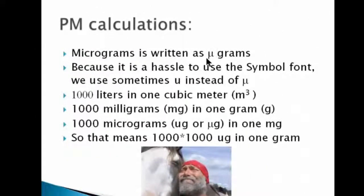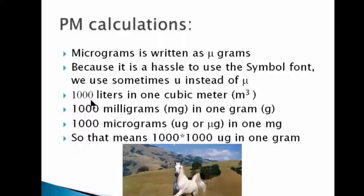Micrograms is written with the Greek symbol mu-grams. Because it's a hassle to change fonts just for this one symbol, we use 'ug' — and that can be confusing instead of the mu. So if you see 'ug,' what they mean is micrograms. There are 1,000 liters in one cubic meter. There are 1,000 milligrams (abbreviated mg) in one gram, and 1,000 micrograms (ug) in one milligram. So in one gram, you've got 1,000 times 1,000 micrograms — one million micrograms in one gram.